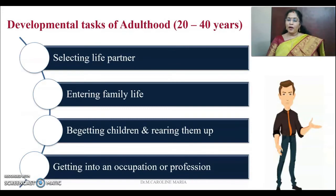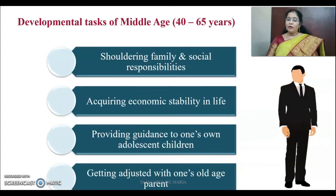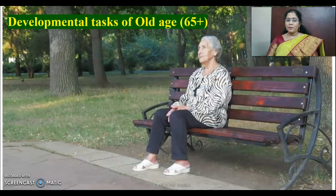The developmental tasks of adulthood, from twenty to forty years, include selecting a life partner, entering into family life, begetting and rearing children, and getting into an occupation or profession. For middle-aged people, the developmental tasks include shouldering family and social responsibilities, securing economic stability in life, providing guidance to one's adolescent children, and getting adjusted with one's aging parents.